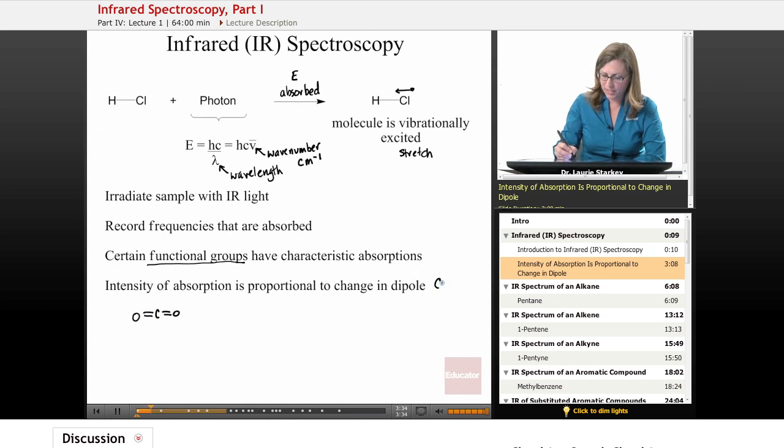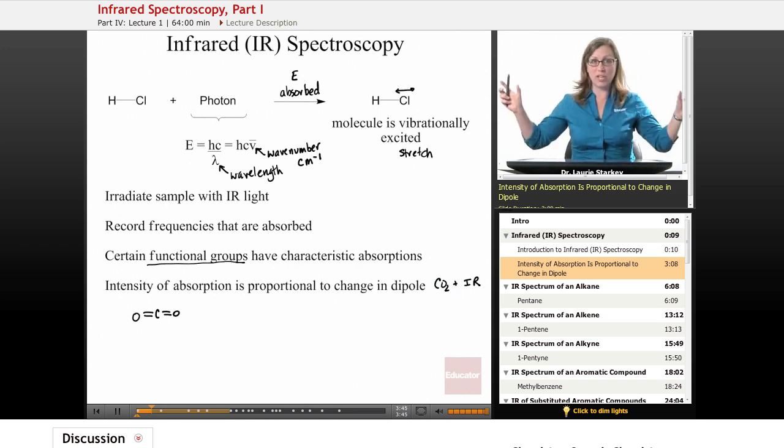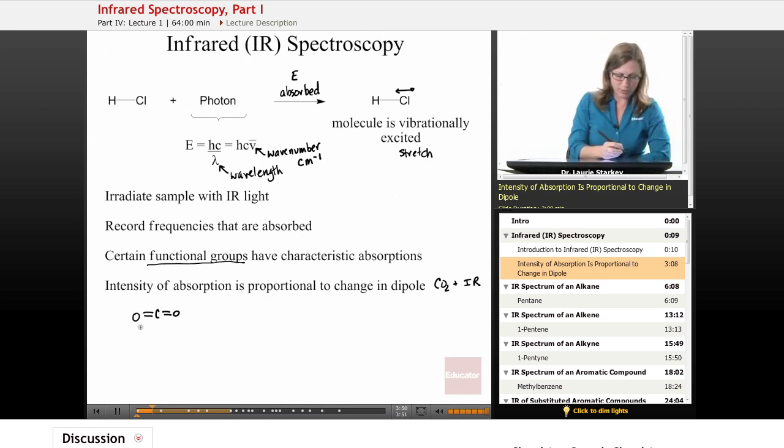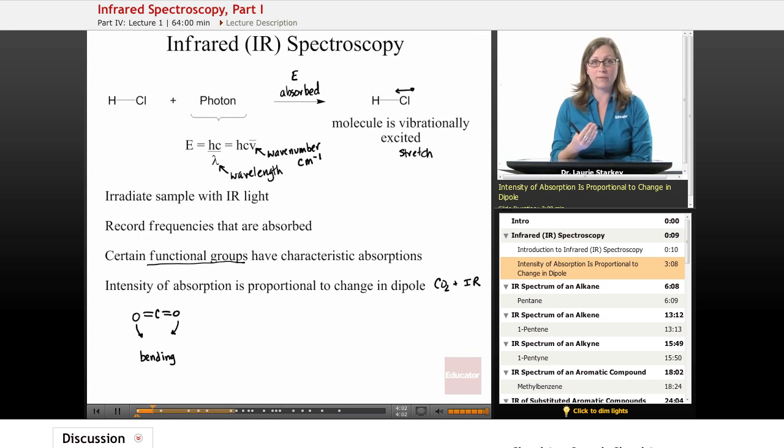If we take CO2 and irradiate it with infrared light, what can happen? How can this molecule become vibrationally excited? One thing it can do is the CO bonds can bend. The oxygens can bend toward one another, and we would describe that motion as bending.